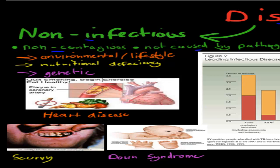Non-infectious diseases are caused by different factors — for example, environmental or lifestyle factors. One example would be heart disease. It's caused by smoking too much, by having an unbalanced diet, by not doing enough exercise, and over a lifetime, plus genetic factors, these can give you heart disease. That's why it's non-infectious — it's not giving you food for an infection.